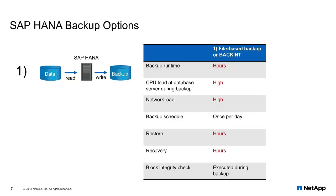Both approaches have a significant impact on the performance of the SAP HANA database. Since the database is responsible to read and write the data, there is an additional high CPU load to do these operations. There's a high I/O load on the primary storage, and you need a backup network that transports the data. In addition, the backup runtime itself, specifically for larger databases, can be quite significant, which results in lower operation speeds when you run these backups.